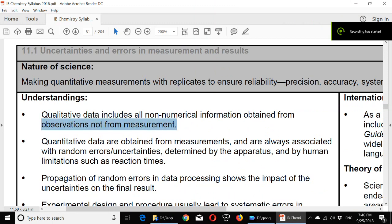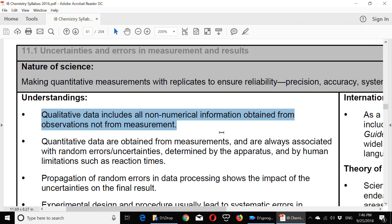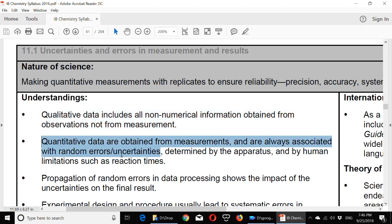Copyright IB from their syllabus: Qualitative data includes all non-numerical information obtained from observations, not from measurement. Quantitative data are obtained from measurements and are always associated with random errors and uncertainties determined by the apparatus and by human limitations such as reaction times. I'm not completely in agreement with that 'always associated with random errors.'